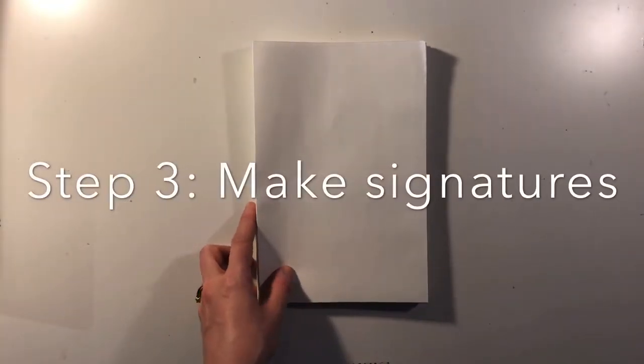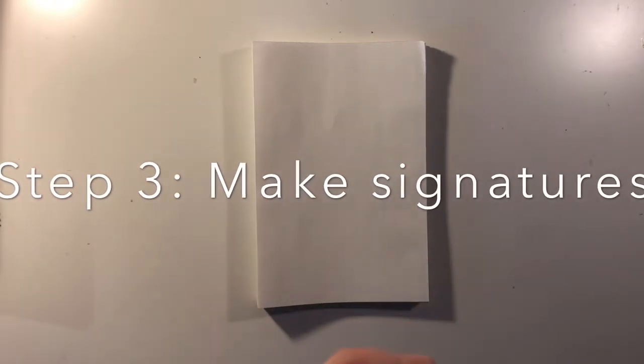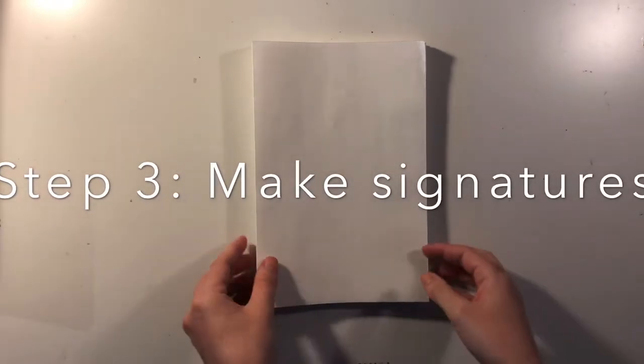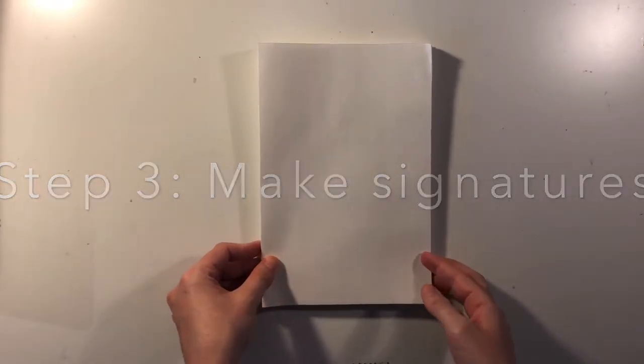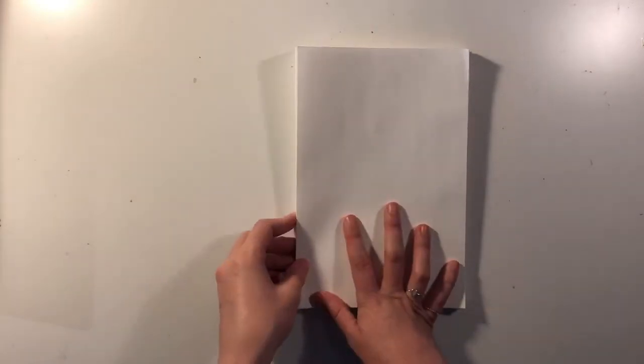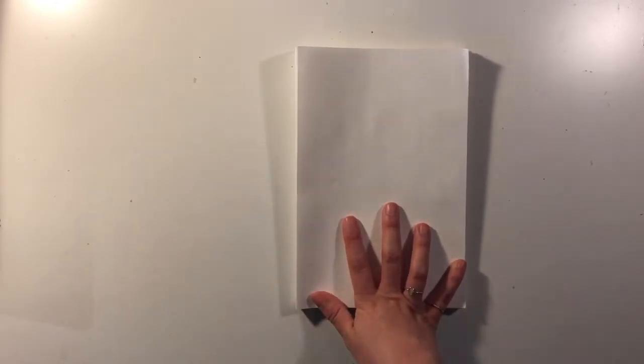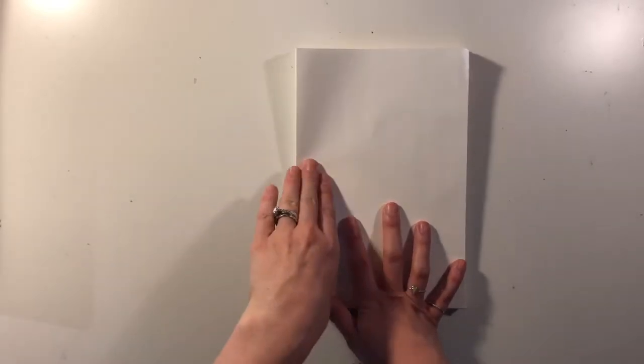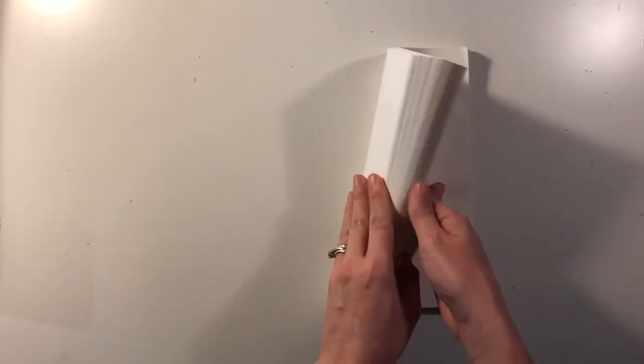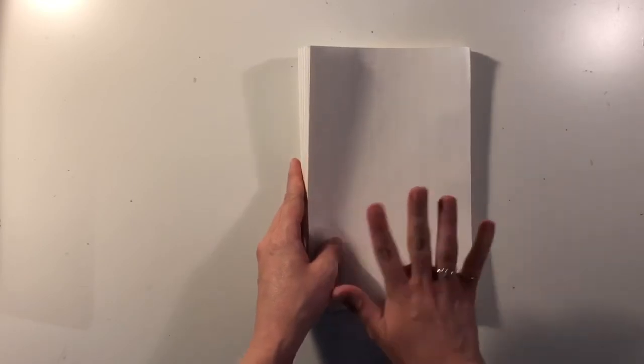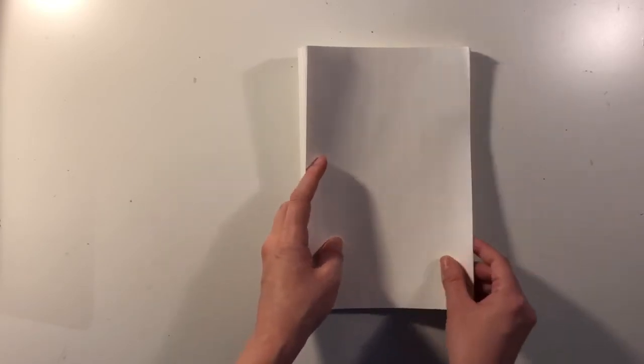What we're going to do next is create what's called a signature. The signatures are the smaller little groups of pages that are going to be sewn together into our book. If you are using the mixed media paper, you're going to create a signature or a series of signatures with three pages per signature. However, if you're like me and you're using the thinner sketch paper, you are going to create signatures with five pages per signature.